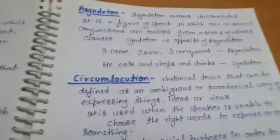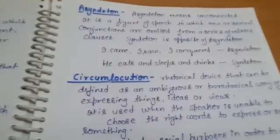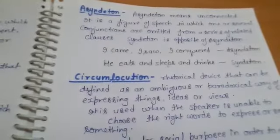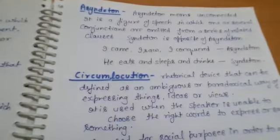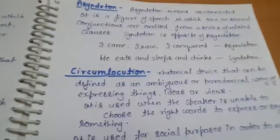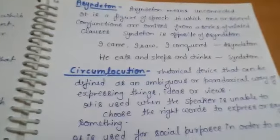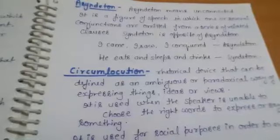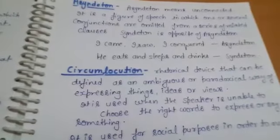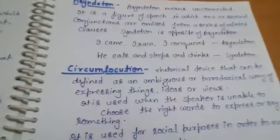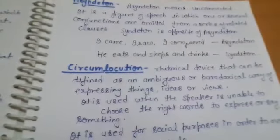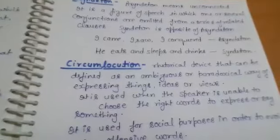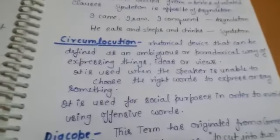Example of asyndeton: 'I came, I saw, I conquered.' This is asyndeton. Next example of syndeton: 'he eats and sleeps and drinks.' Here 'and' and 'and' — the conjunction is used again and again. So here is syndeton.